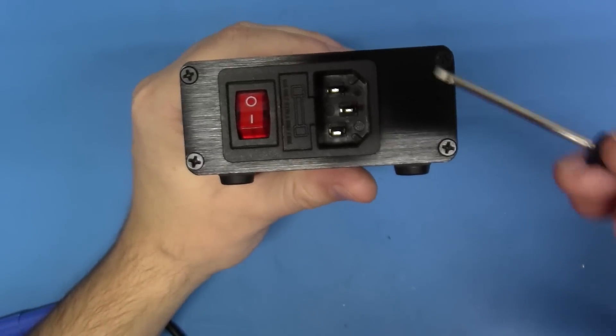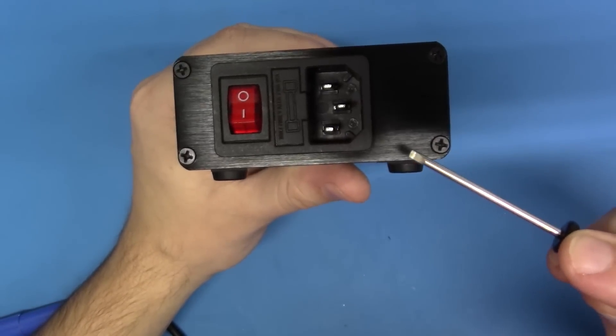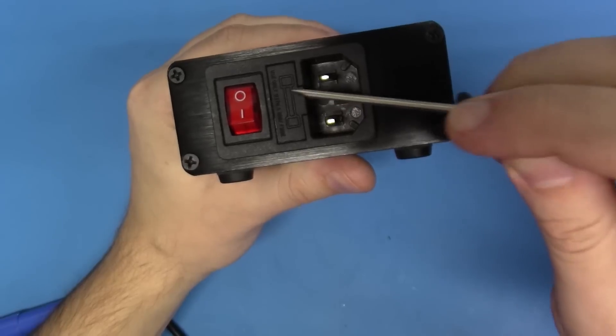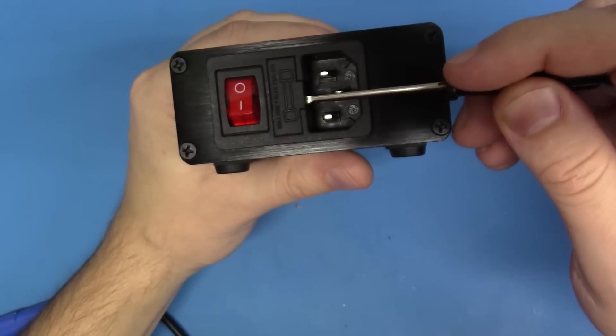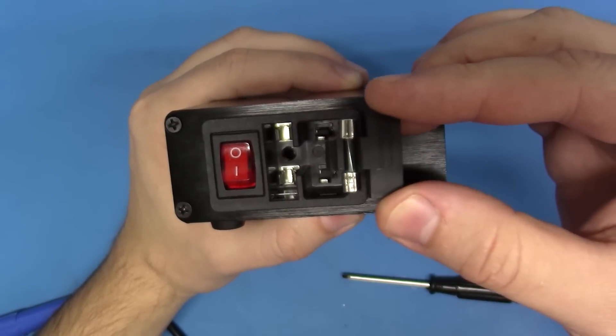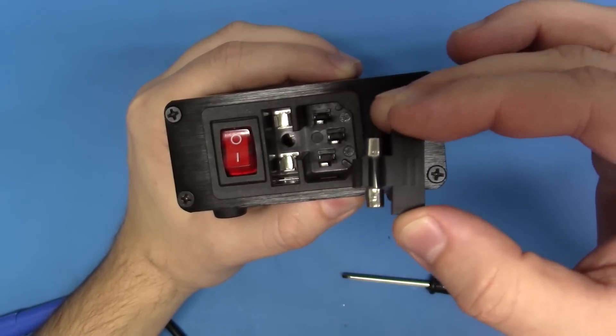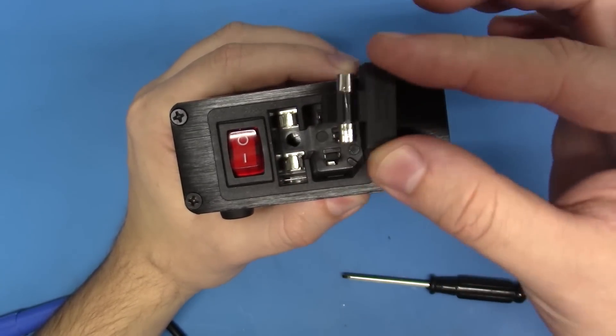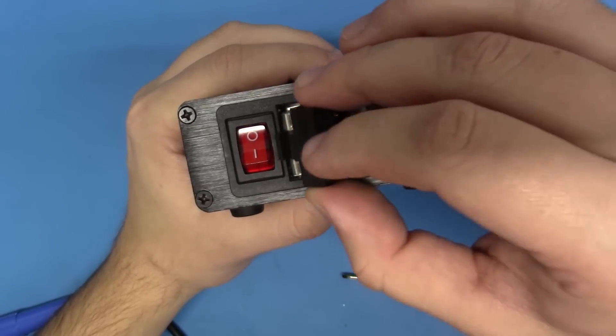Before we jump into that action, there's one thing I forgot to mention. We're looking at the back again where the AC power comes in. We have some protection with this inline fuse off of the AC input. How nice is that? Excellent.